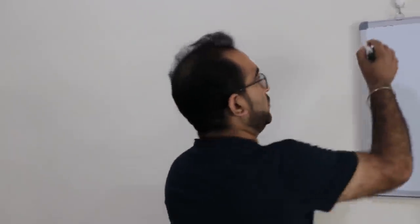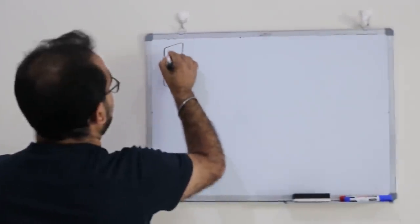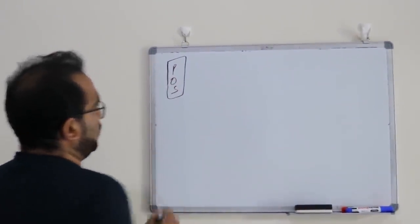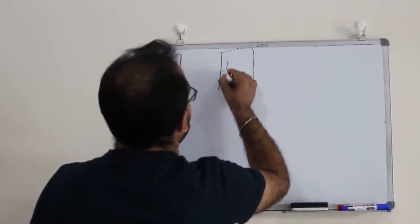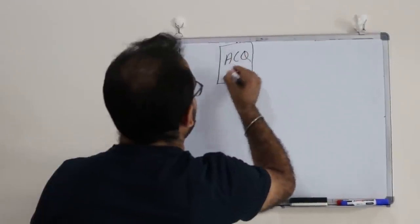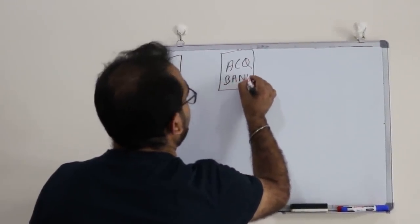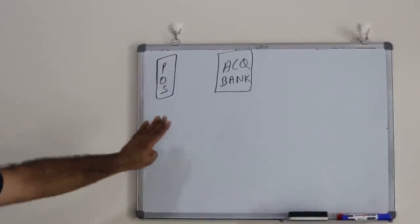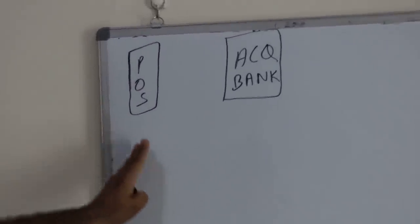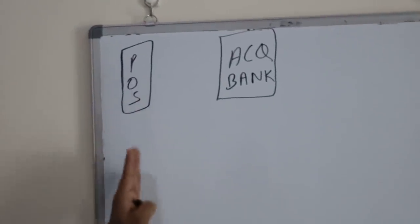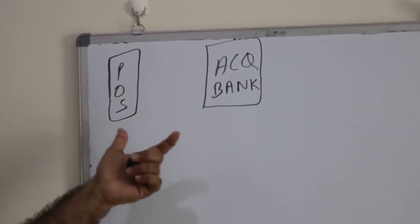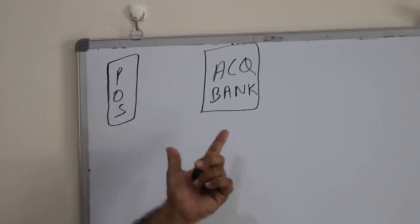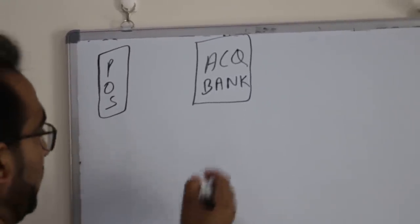We will take the same example: you went to the supermarket, you used your credit card and entered your PIN number at the POS terminal. This is the POS terminal and this is the acquiring bank. Let's understand first of all how the PIN is translated between these two entities — between a POS terminal and an acquiring bank.